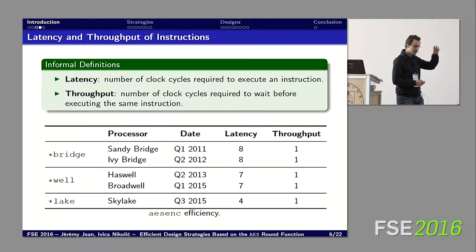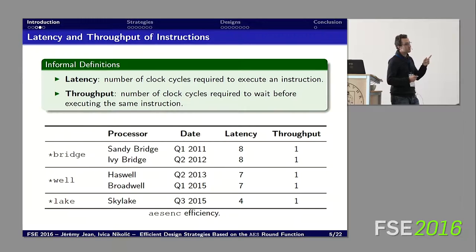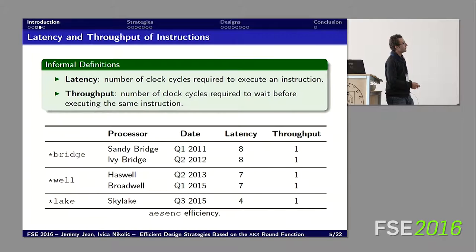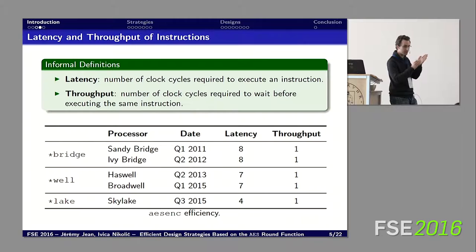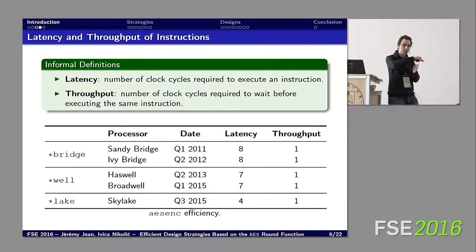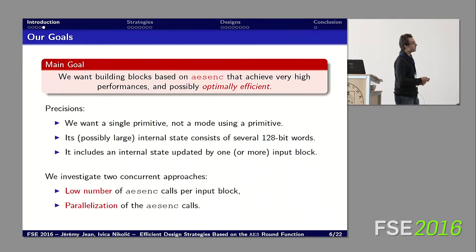To give hints about how to design a construction based on AES, we define two notions informally. First, latency: the number of clock cycles inside the processor you have to wait before you can use the output of the instruction. For example, on Haswell, the AES enc instruction has a latency of seven, meaning you wait seven cycles before using the output. Second, throughput: the number of clock cycles you have to wait before calling the same instruction again. On Haswell, you only wait one cycle before calling the next one, even before receiving the previous output — this is achieved through parallel execution.